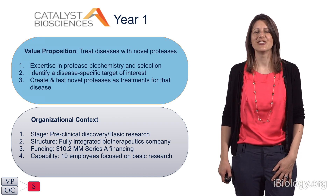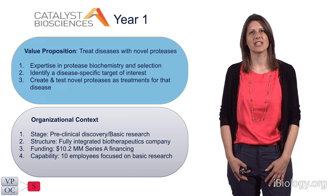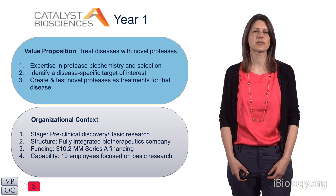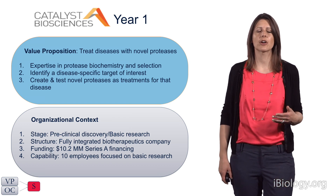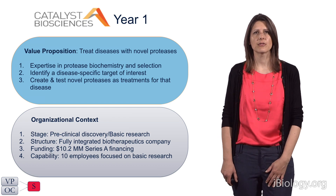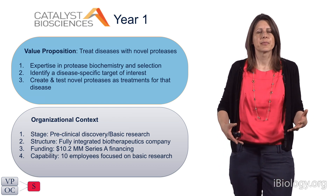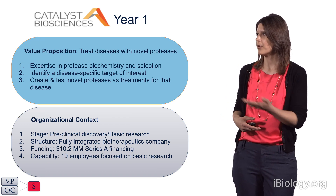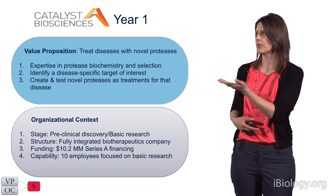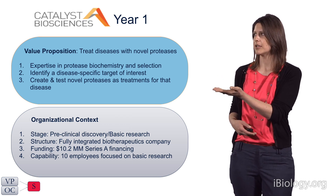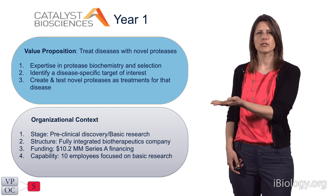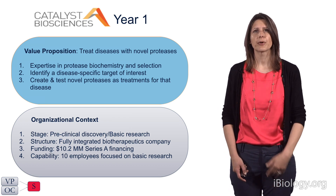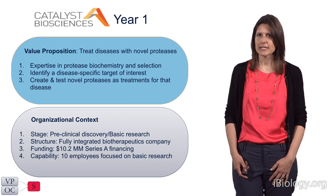Let's talk about Catalyst Biosciences in year one as an example. Catalyst was founded on the idea of taking proteases, redesigning them to target novel proteins involved in disease — in particular, so these proteases could go after targets not amenable to antibody therapeutics. In year one, the organization was nascent and really early. It was in preclinical discovery and basic research, with the goal of becoming a fully integrated biotherapeutics company. Funding was $10.2 million in Series A, and the capability was small — ten people mostly focused on proteolytic assay development, automation, cell-based assays, and animal studies.